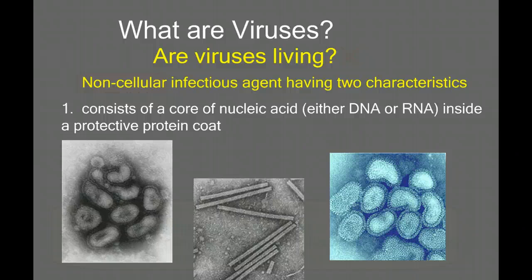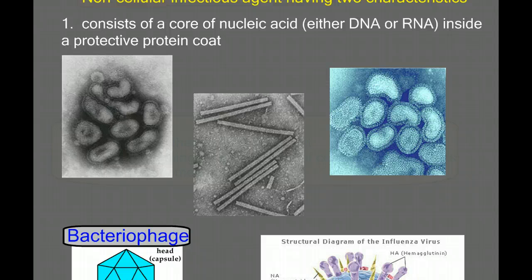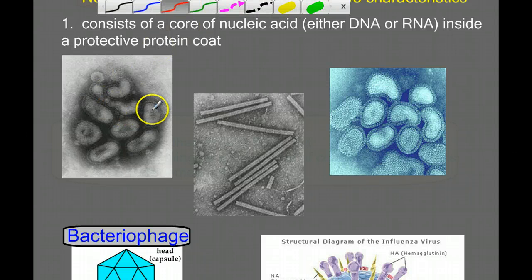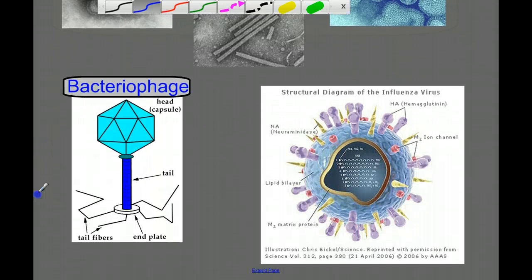These viruses consist of a protein coat surrounding some nucleic acid. If we look at these electron microscope pictures of viruses, basically all viruses have some nucleic acid core surrounded by some coat of protein. These are pretty amazing photographs — you can see this is a flu virus over here. Down here we have some diagrams, including a bacteriophage, which is a type of virus that infects bacteria. It kind of looks like a space capsule.